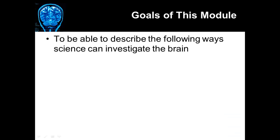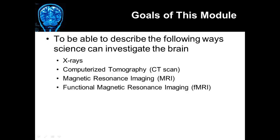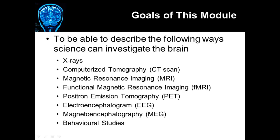The goals of this module are to be able to describe the following ways that science can investigate the brain: x-rays, computerized tomography or CT scan, magnetic resonance imaging or MRI, functional magnetic resonance imaging or fMRI, positron emission tomography or PET scanning, electroencephalogram or EEG, magnetoencephalography or MEG, and behavioral studies.